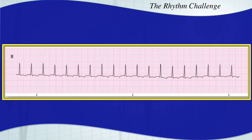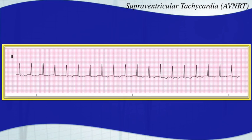This is a supraventricular tachycardia. More specifically, this is AV nodal reentry tachycardia. You can't see any obvious atrial activity. Very narrow QRS complexes, and very fast, and very regular. All of those fit SVT.